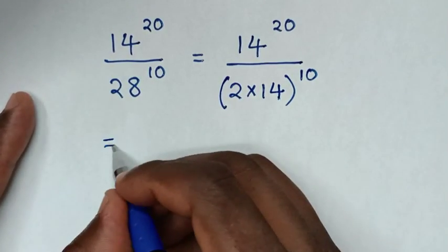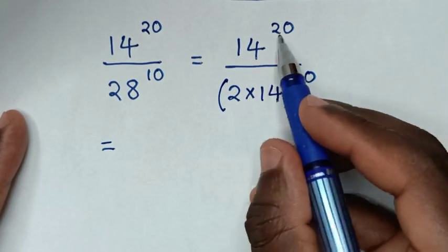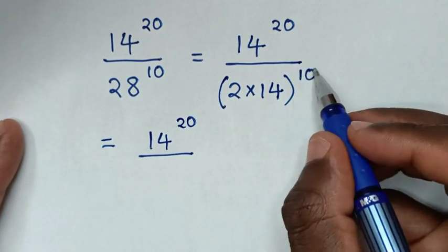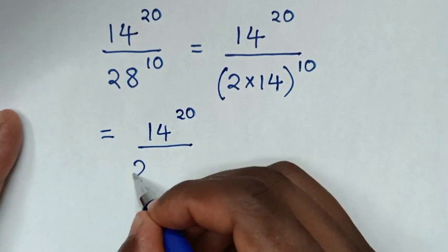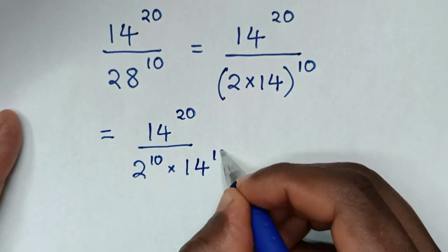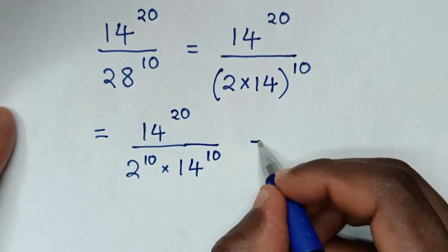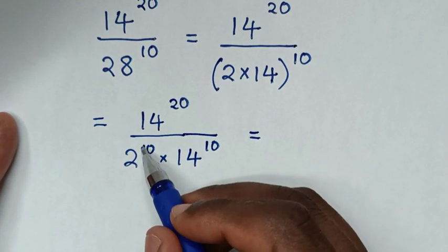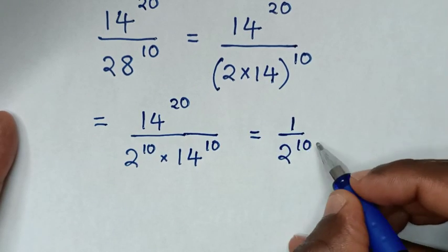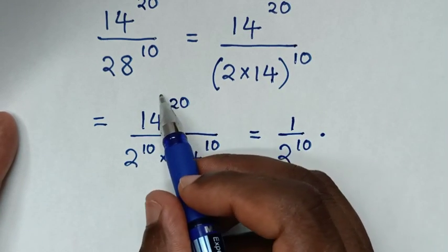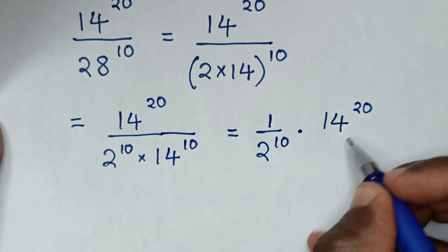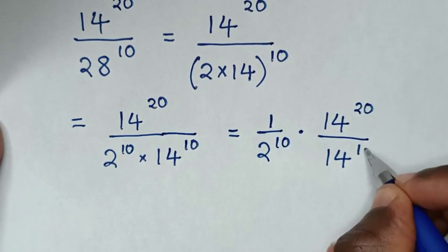Then it will be equal to 14 power of 20, then over — we take the power of 10 inside the bracket — so it will be 2 power of 10, then times 14 power of 10. Then we take 1 over 2 power of 10, times 14 power of 10, times 14 power of 20 over 14 power of 10.